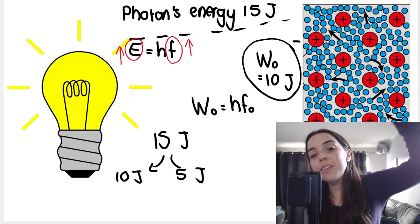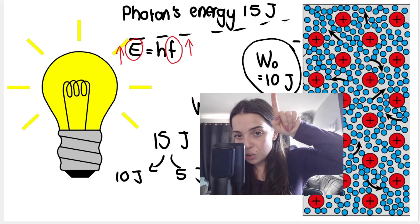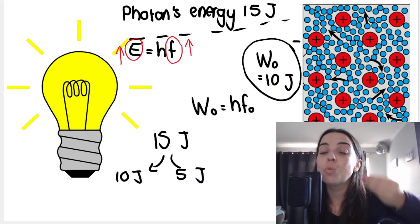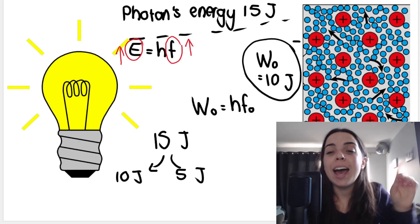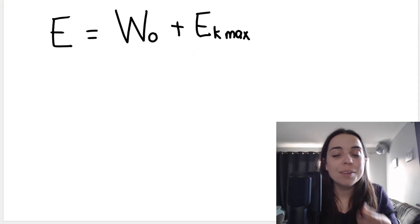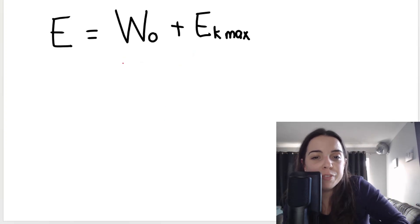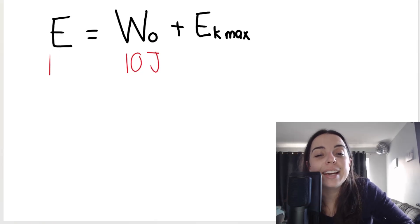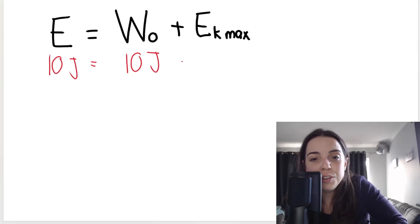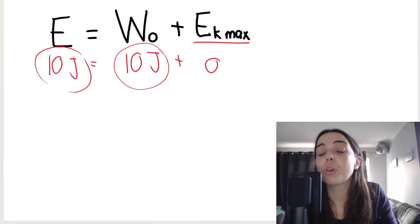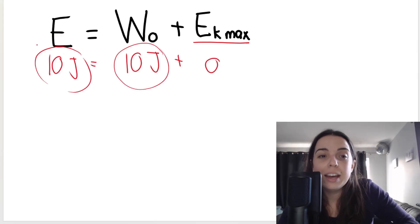However if I continue to increase the frequency of the light, so I make frequency bigger and increase the energy of the light, that will increase this value. Let's say we take it from 10 joules to 15 joules. Now not only do I have enough energy to allow the electrons to escape, but I have 15 joules shining on the surface.